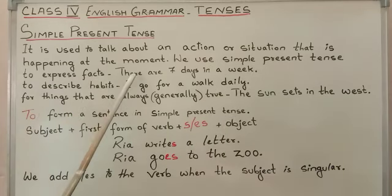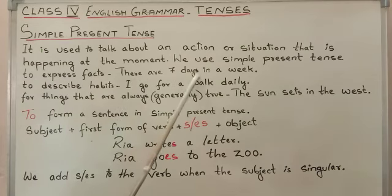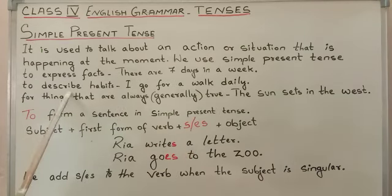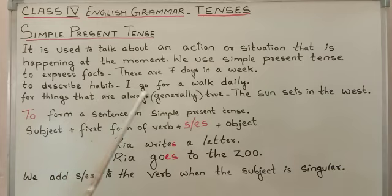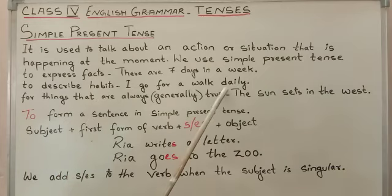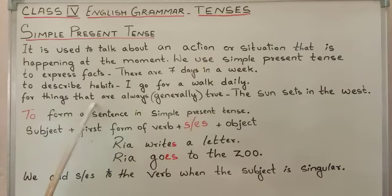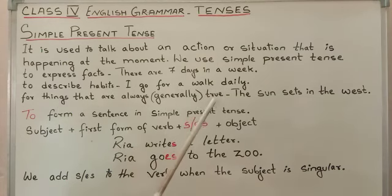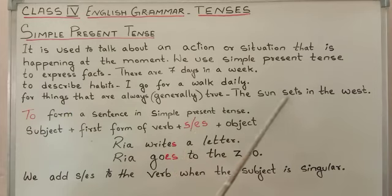For example, there are seven days in a week. To describe habits — for example, I go for a walk daily. For things that are always or generally true — for example, the sun sets in the west.